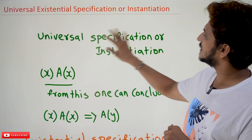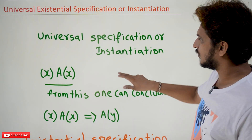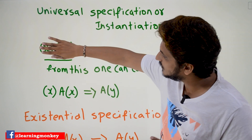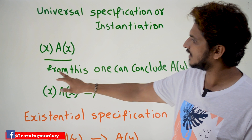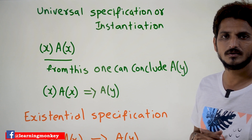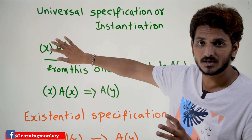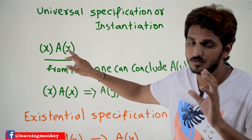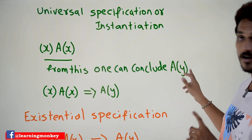The first formula is universal specification, or we call it universal instantiation. What this formula says is: for all x, A(x) — if someone says this equation is true, meaning A(x) is true for all x, then from this we can conclude that A(y) is going to be true. If you take any x value, it is going to be true. X is a bounded variable, and from this we conclude that A(y) is going to be true.